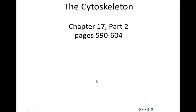This is the second lecture of Unit 4, the second half of Chapter 17. We'll be finishing up our discussion of the cytoskeleton, covering pages 590 to 604 in the textbook. We'll begin today's lecture finishing up the three components of the cytoskeleton. Last lecture we talked about intermediate filaments and microtubules, and in this lecture we'll talk about the actin filaments.